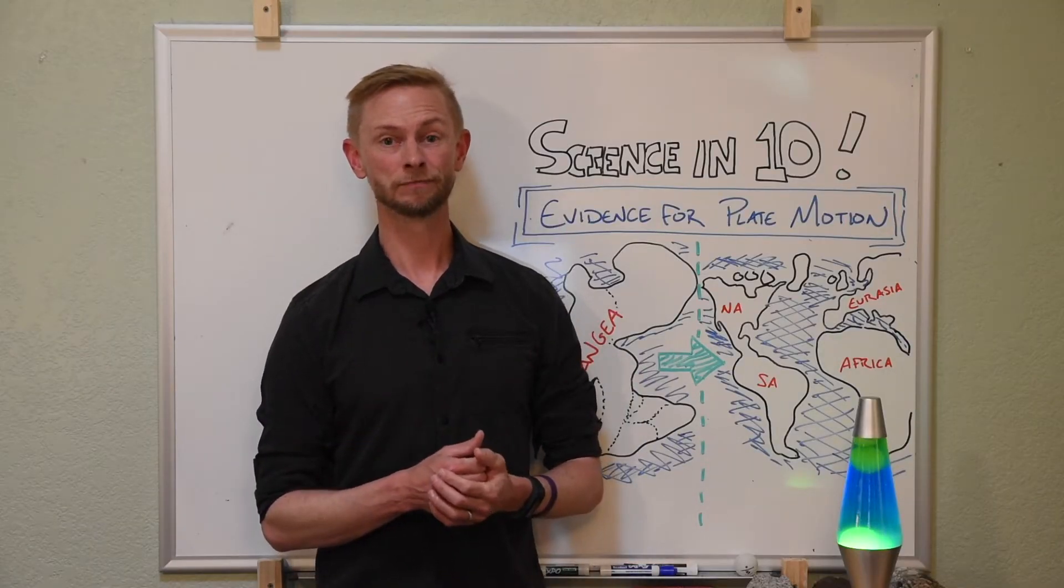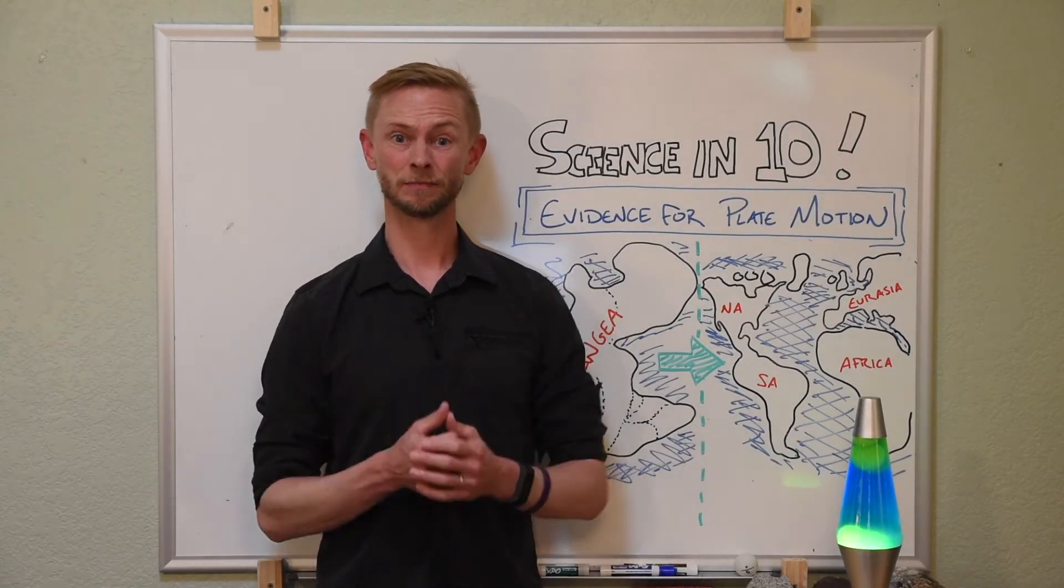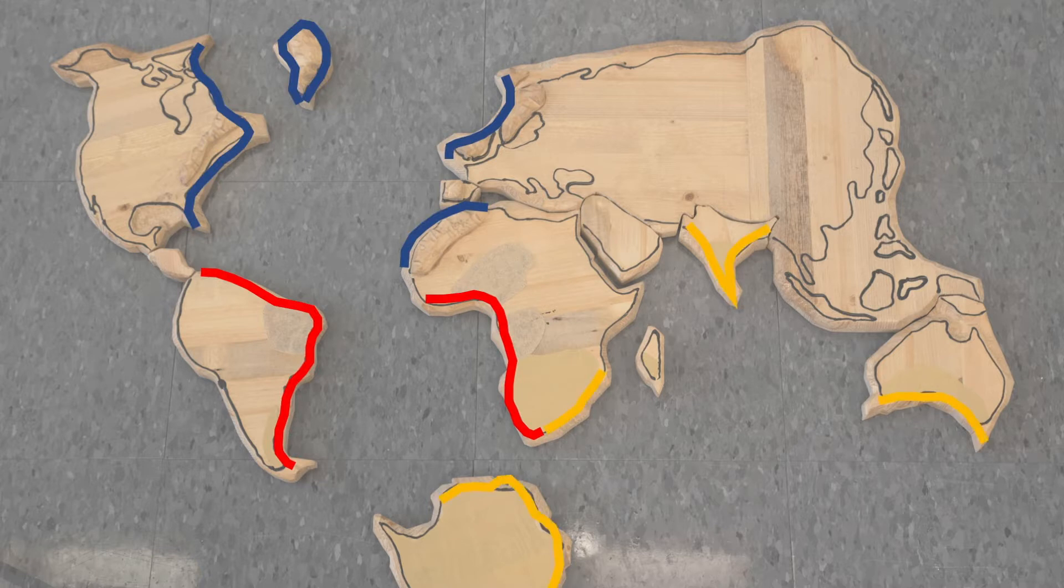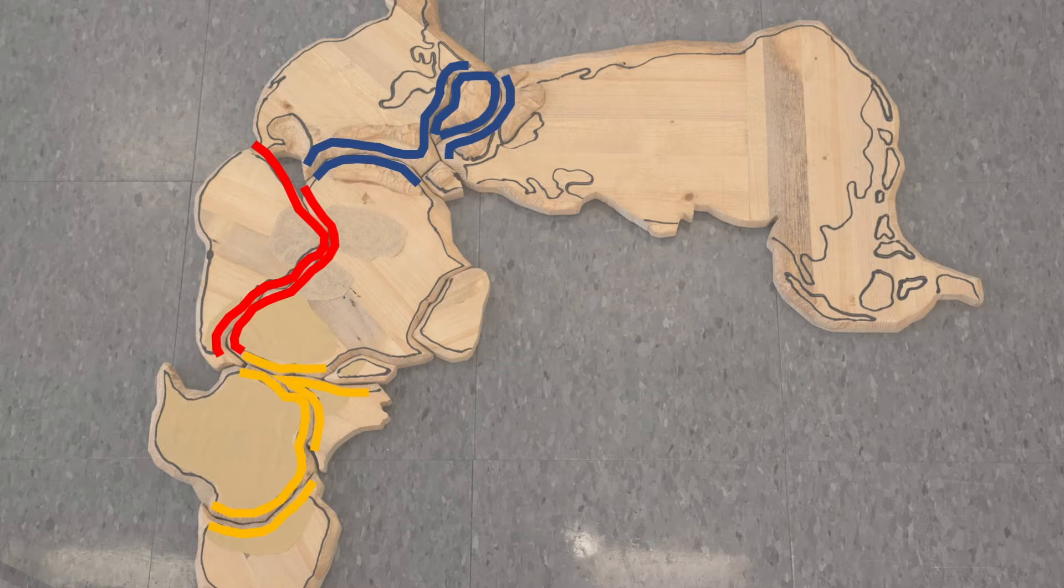What evidence did Wegener have? Actually, lots! Here are a couple examples. The outlines of the continental shelves of Africa, Europe, and the Americas matched up on opposite sides of the Atlantic Ocean, almost as if the continents were pieces of an Earth-sized puzzle.